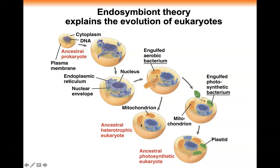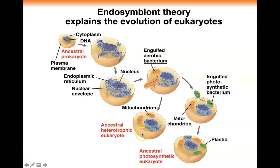Now you have a cell that has both mitochondria and chloroplasts — organelles for respiration and photosynthesis. This is the ancestral photosynthetic eukaryote. Remember, plant cells have both mitochondria and chloroplasts, while animal cells just have mitochondria. The heterotrophic ancestral eukaryote is the ancestor for animals and fungi; the photosynthetic one is the ancestor for plants and other protists.